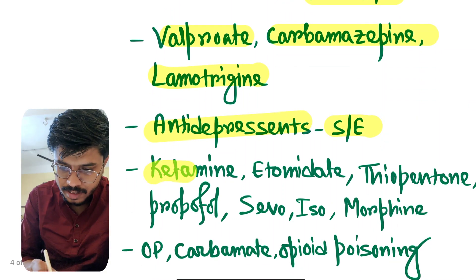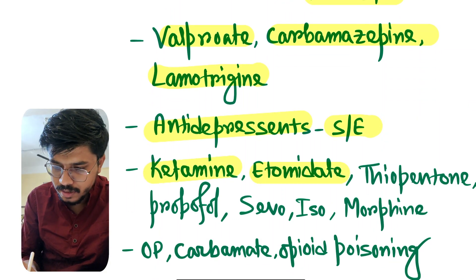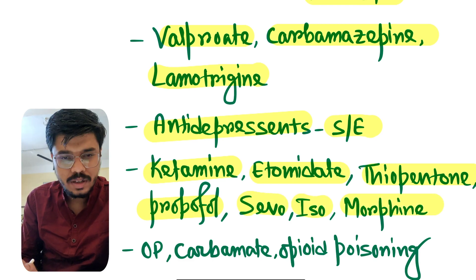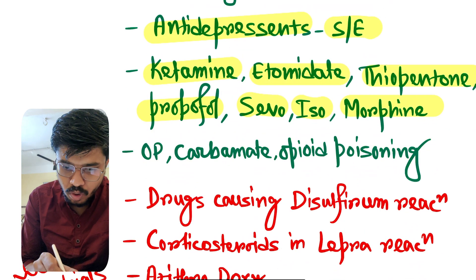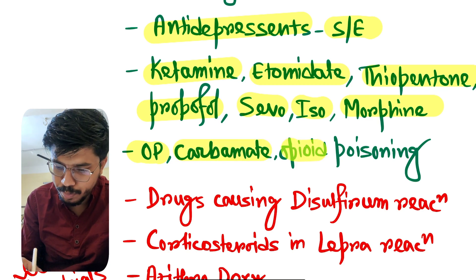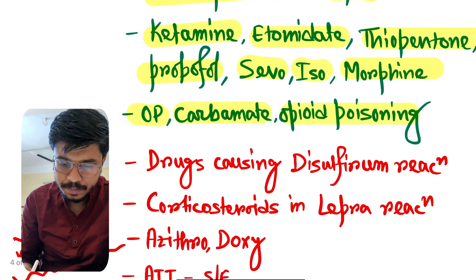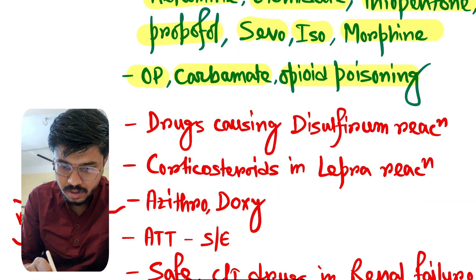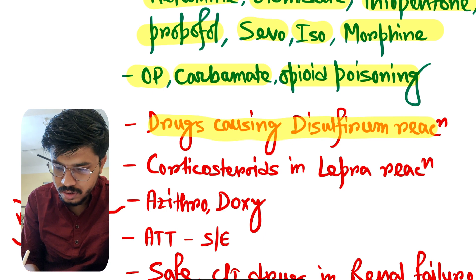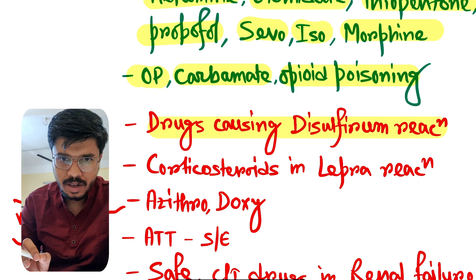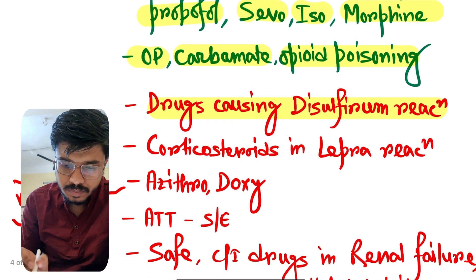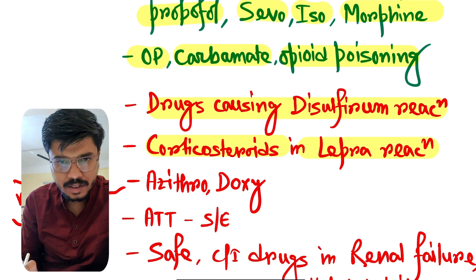Ketamine, etomidate, thiopentone, propofol, sevoflurane, isoflurane, morphine — these are also important in anesthesia. Organophosphorus, carbamate, and opioid poisoning. From antimicrobials: drugs causing disulfiram reaction — very very important, every year there is a question from disulfiram reaction. Corticosteroid in lepral reaction — again important.